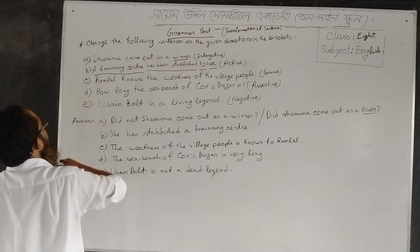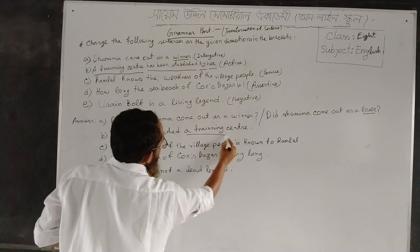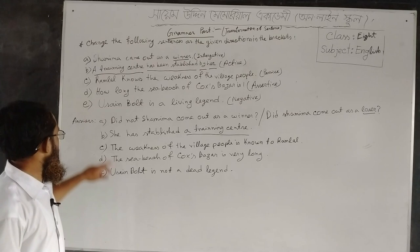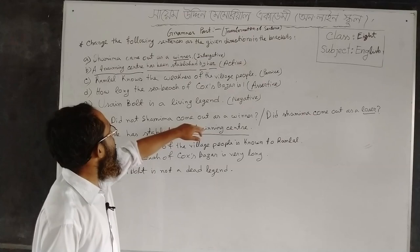Now you have to use the original subject as an object. Here the subject is 'a training center', and it is used as an object. The answer goes: She has established a training center. This is the active form of this passive sentence.